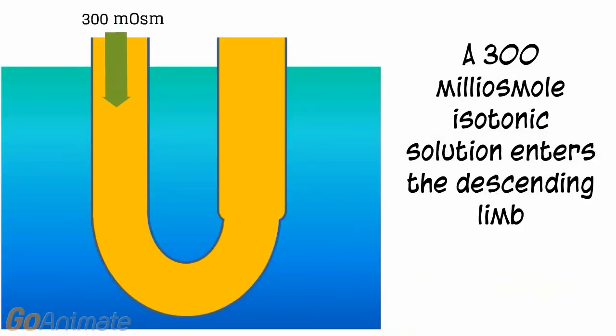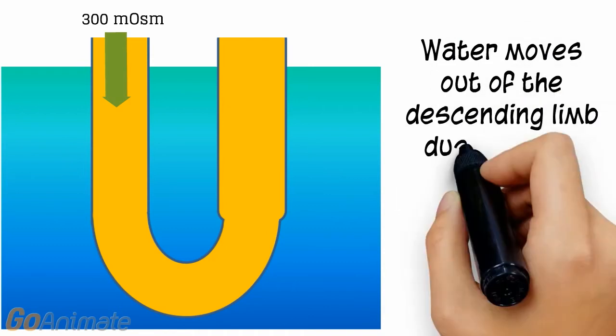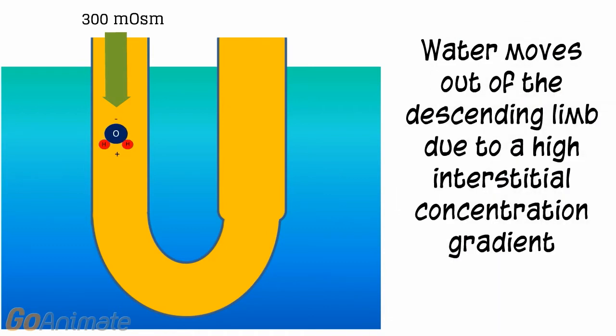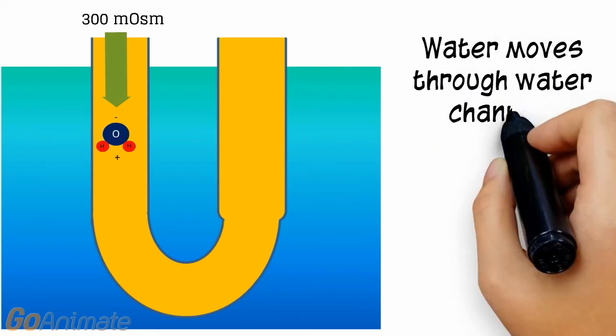A 300 milliosmol isotonic solution enters the descending limb of the Nephron Loop. Water moves out of the descending limb through aquaporins or water channels toward the higher solute concentration in the interstitium.